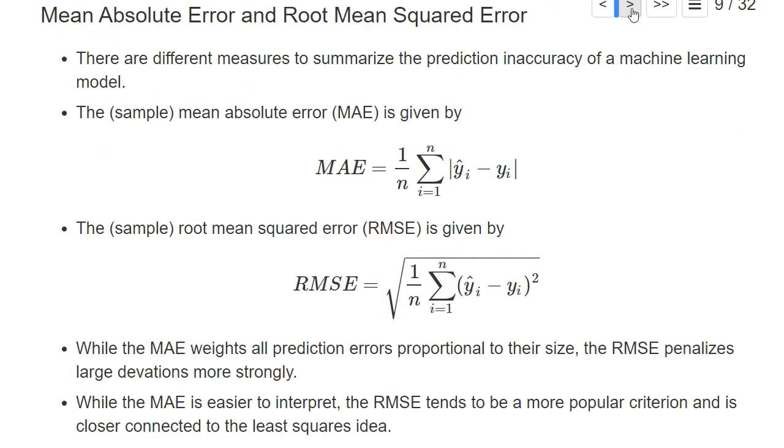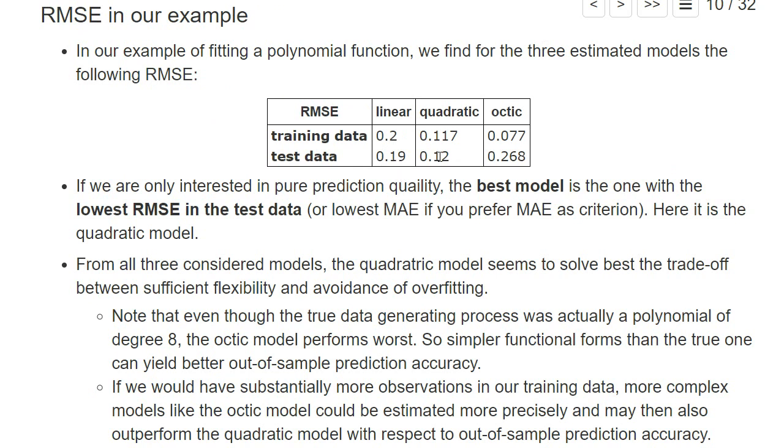So in our simulation, the quadratic model was better and made better out of sample predictions than the octic model. If we would have much more training data, a thousand observations for example, this ranking can shift. Then probably our octic model can be fitted much better and wouldn't depend so much on the random noise. And then maybe the octic model would have the best out of sample prediction accuracy.